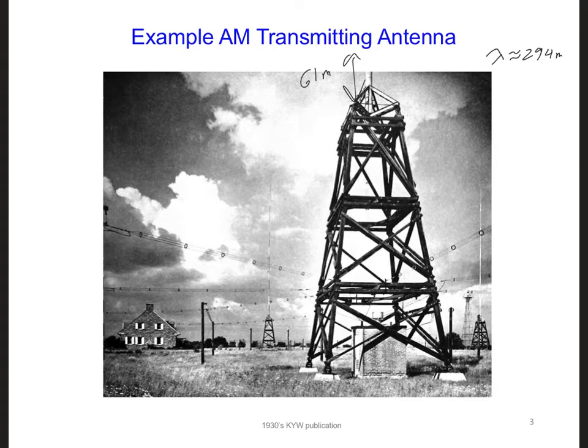But first, from basic antenna theory, any structures that are within roughly one wavelength, which in this case is 294 meters, of the radiating element can impact how the antenna radiates. Because the region within one wavelength of the antenna is what's called the near field of the antenna.